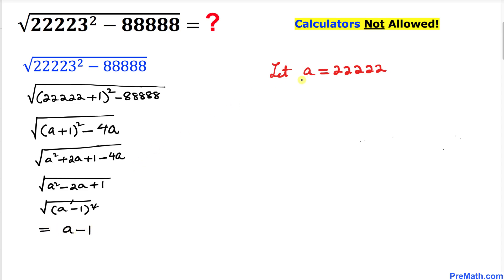But we know that our A value is 22,222. Let's go ahead and replace this one. I can write 22,222 take away 1. So that is going to give us 22,221.